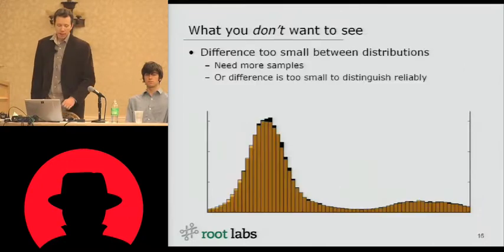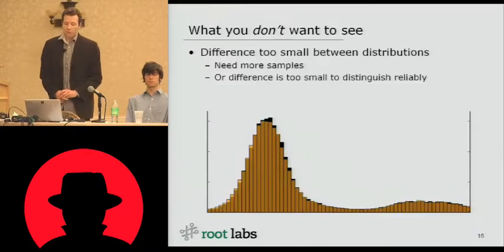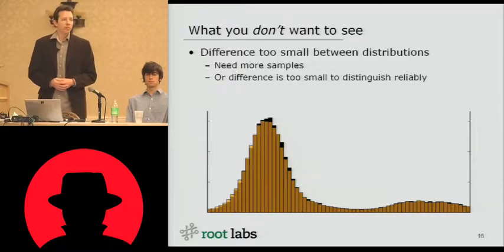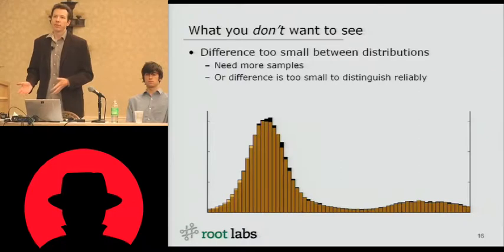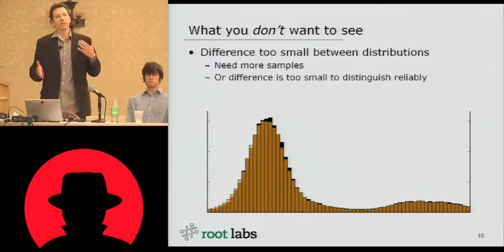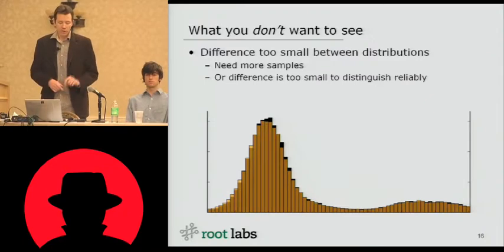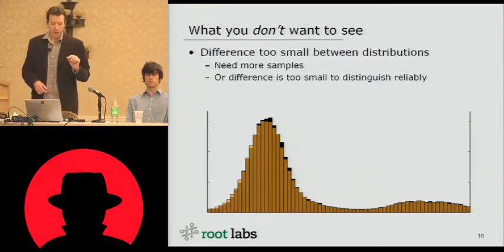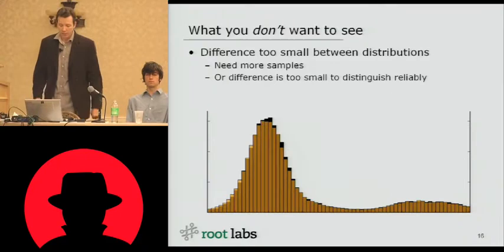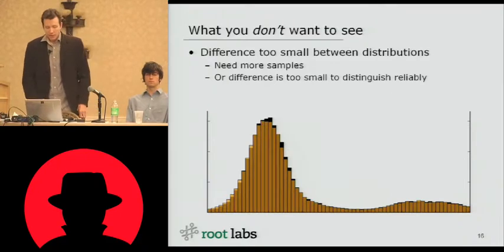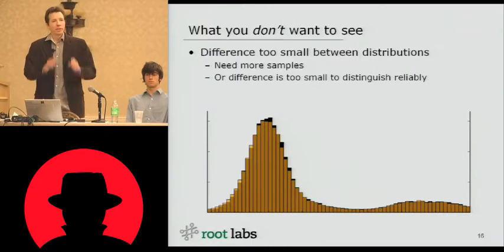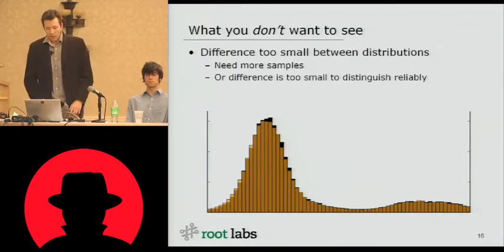What you don't want to see is this: your two distributions are basically identical with a small number of variations. If you were to try to do hypothesis testing based on this, you'd probably find a lot of false positives where you find differences where there are none, or false negatives where you say there are differences but you're keying on too small a detail and it's actually not a good estimator. In this case, what you can do is take more samples. When you take more samples, often if the distributions are different, they'll separate. Or it's possible that the difference is just too small to distinguish reliably.